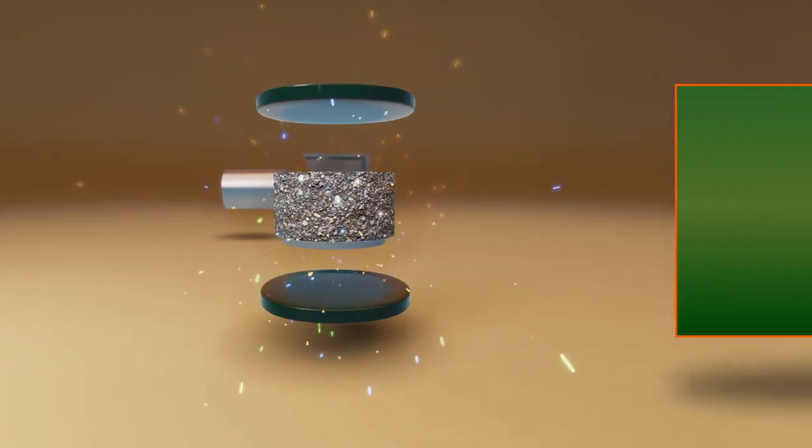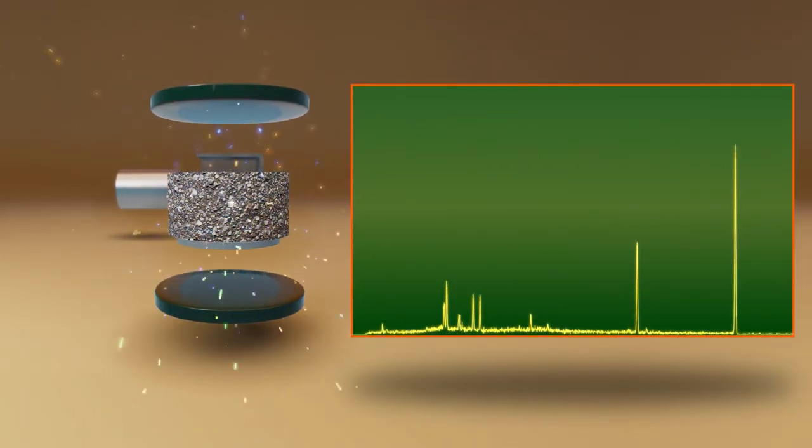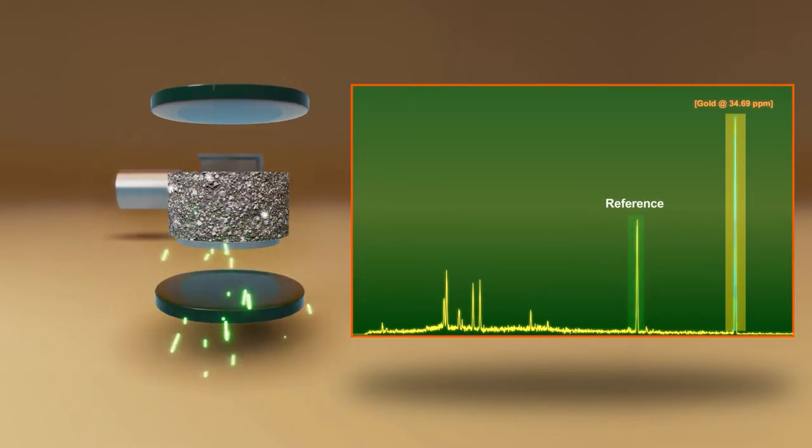The sensitive detector system records and counts these gamma rays. Processing software then relates the strength of the gamma ray signal back to the concentration of gold in the sample. The whole process takes as little as two minutes.